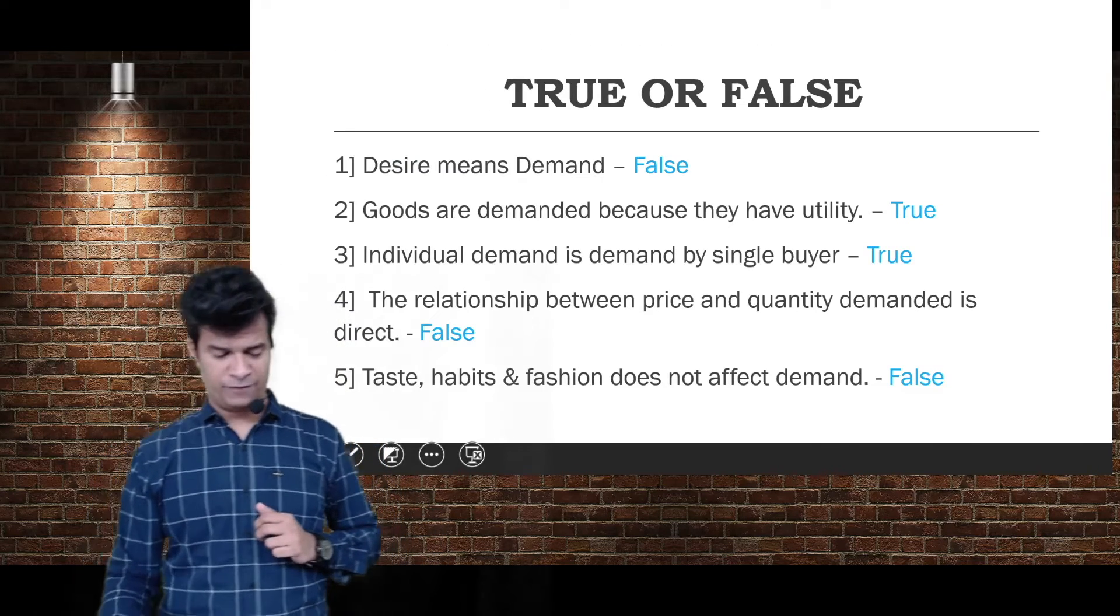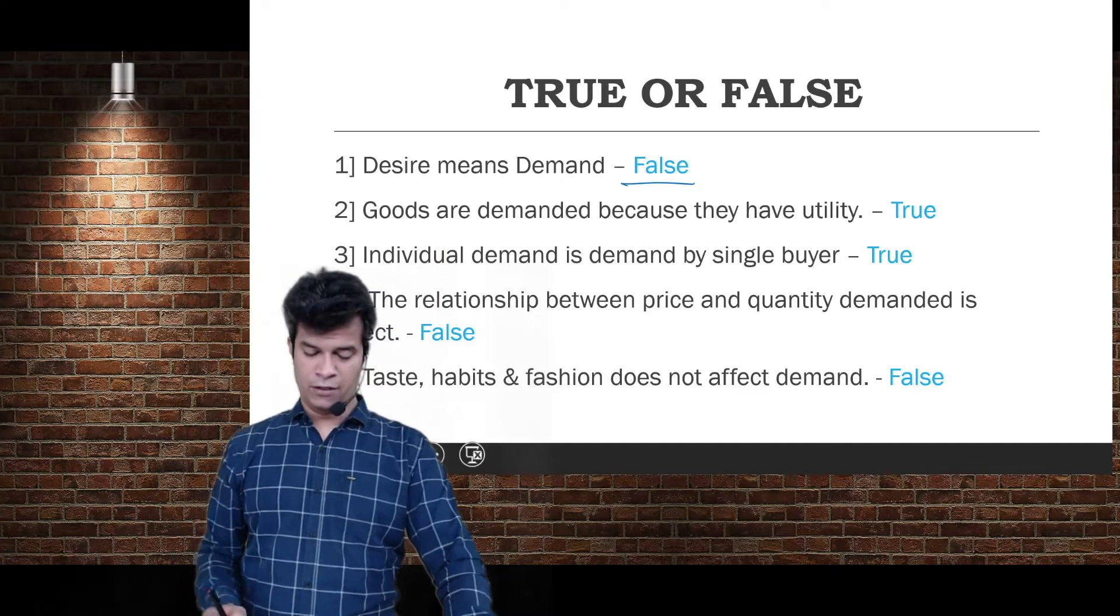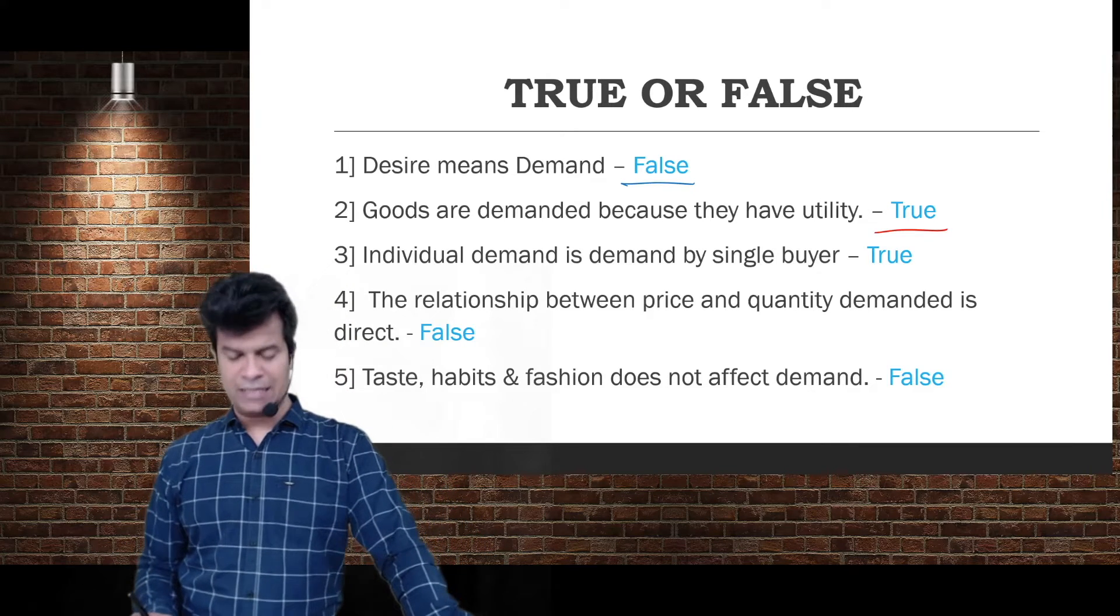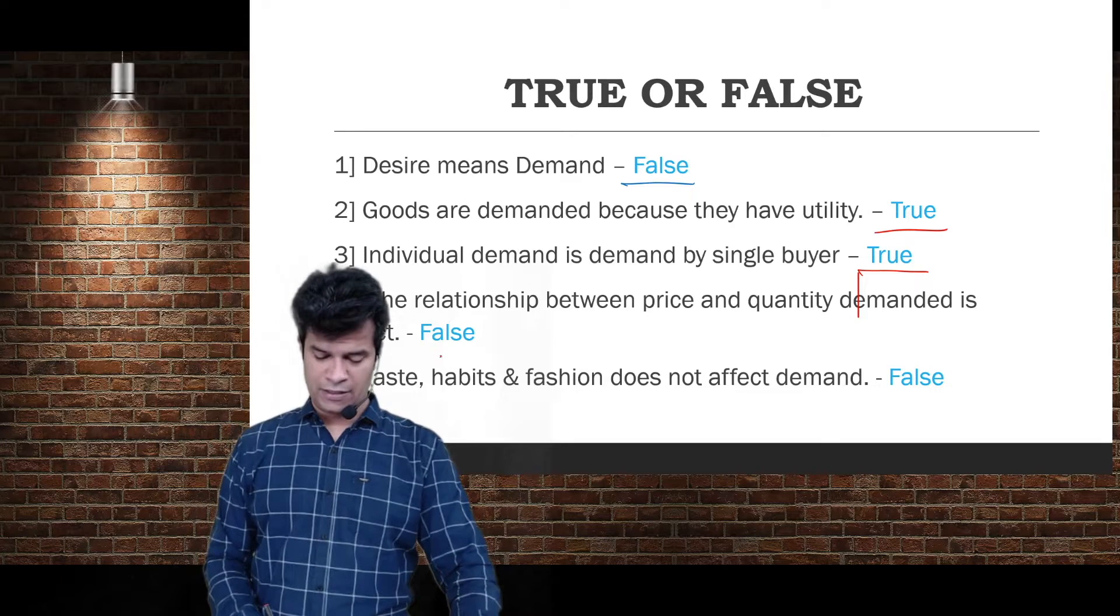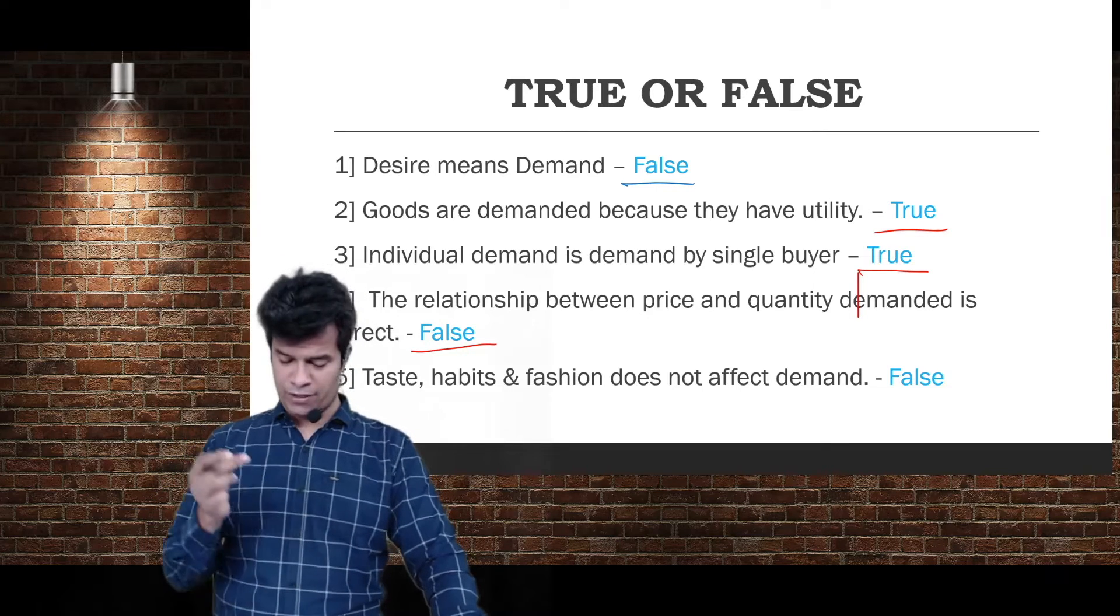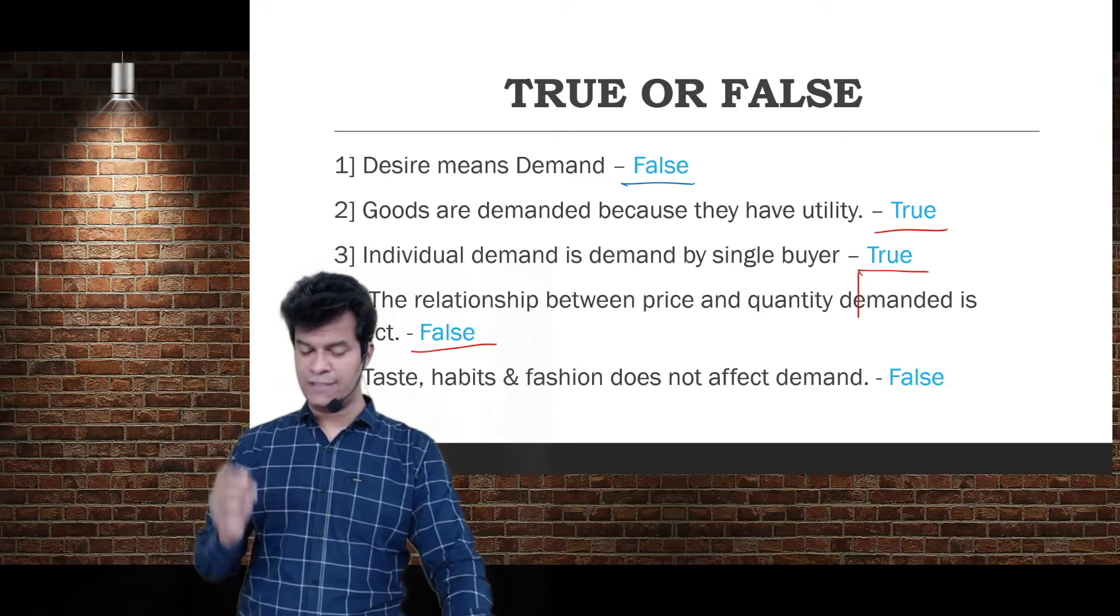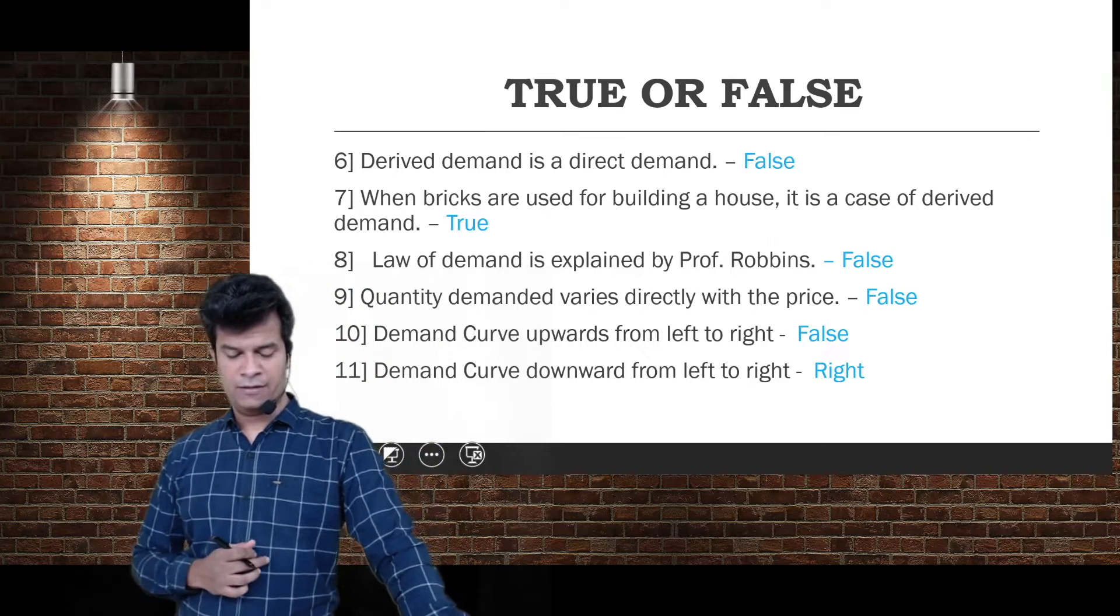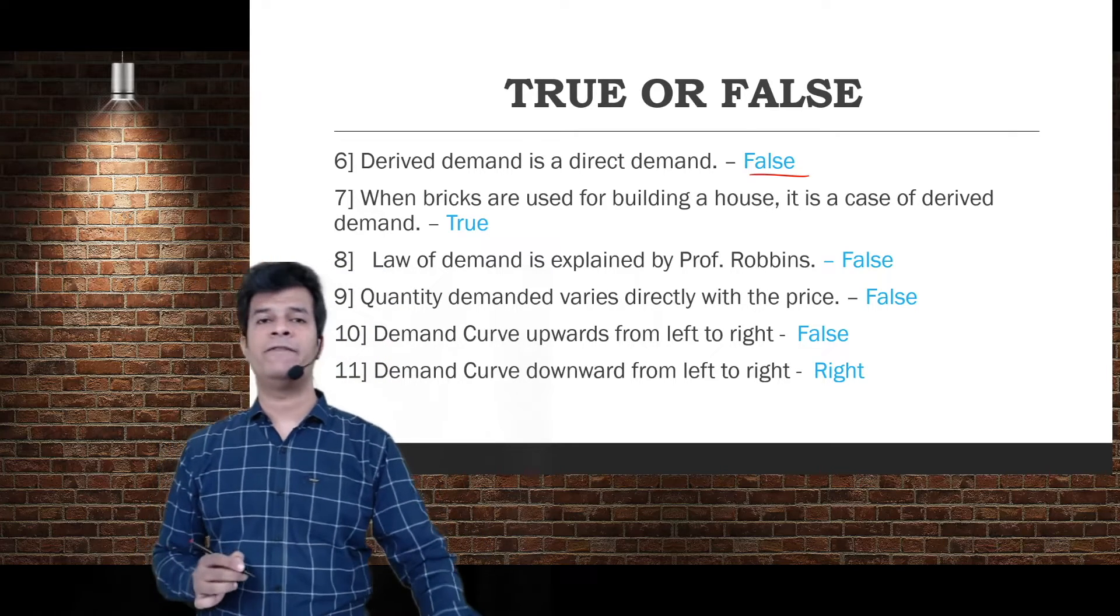Now moving to true and false. Desire means demand - answer is false. Goods are demanded because they have utility - 100% true. Individual demand is demanded by single buyer - true. The relationship between price and quantity demanded is direct - false, it's inverse.